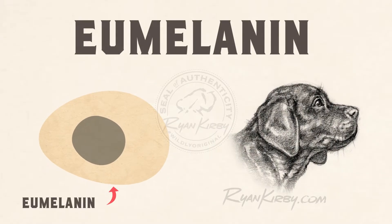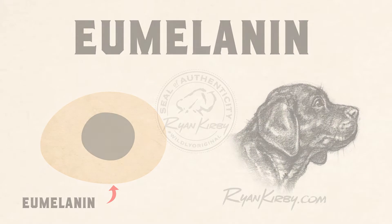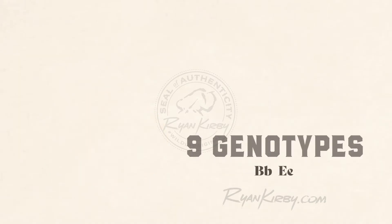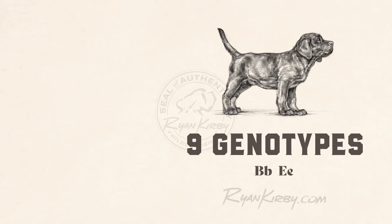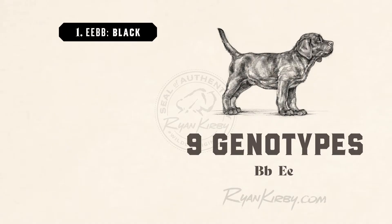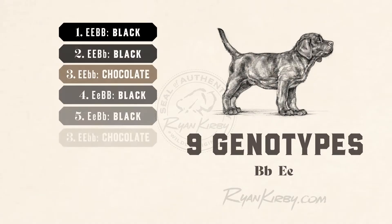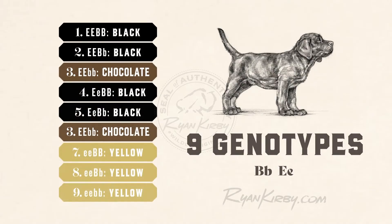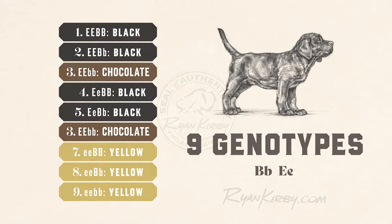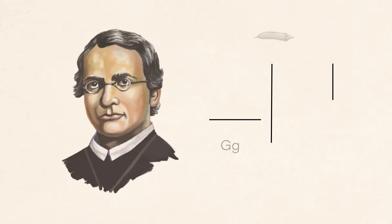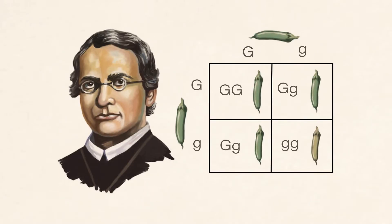Labs get their color from a pigment called eumelanin, which is controlled by two genes represented with a B and an E. Every lab has a combination of these B and E genes called their genotype, with nine possible genotypes that control their color. It's kind of like the old Punnett Square if you remember from high school with Gregor Mendel crossing peas and all that kind of stuff.